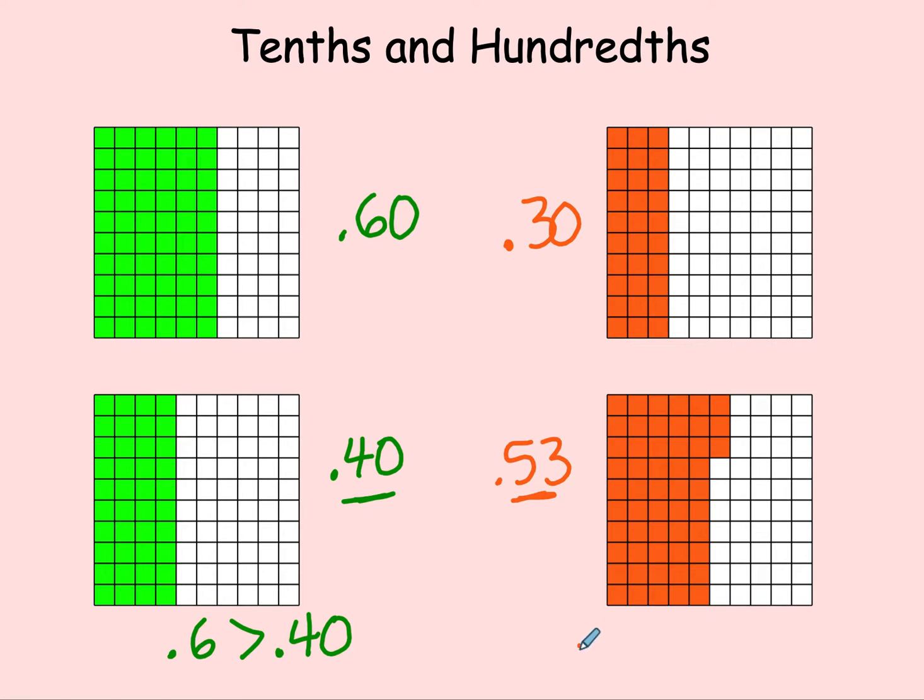53 hundredths would be greater. So 53 hundredths is greater than three tenths.